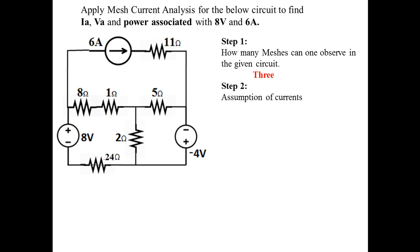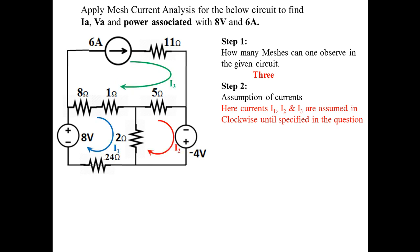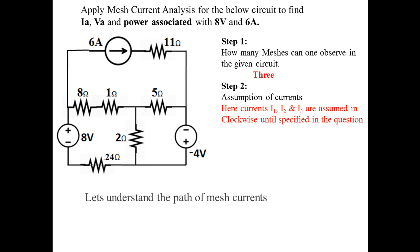Step 2 is assumption of current. We assume the currents I1, I2, I3 in clockwise direction, selected arbitrarily. I1 is flowing through 8Ω, 1Ω, 2Ω, 24Ω and 8 volts in clockwise direction. I2 is traveling in clockwise direction through 5Ω, -4V and 2Ω. I3 is traveling in clockwise direction through the 6A source, 11Ω, 5Ω, 1Ω and 8Ω.